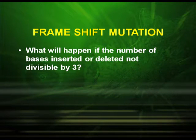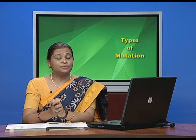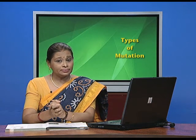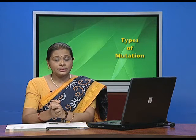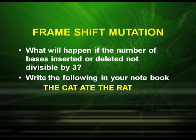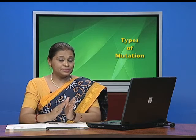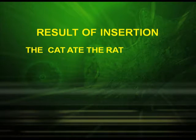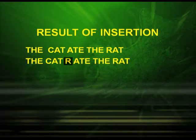Another type of mutation is called frame shift mutation, where the reading frame totally changes. Suppose what will happen if the number of bases inserted or deleted is not divisible by 3. Why are we taking 3? Because the codon is triplet. Write the following sentence in your notebook: 'The cat ate the rat.' You can see each word has 3 letters, which is analogous to the nitrogenous bases. Now let us see what happens after inserting another letter.